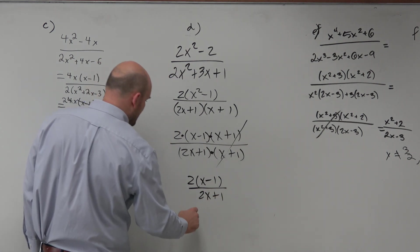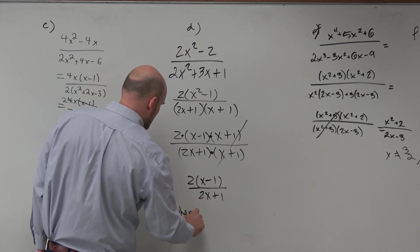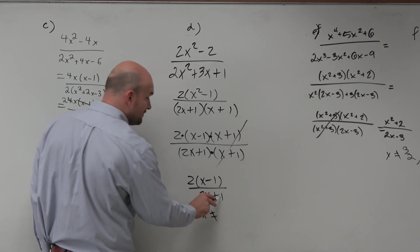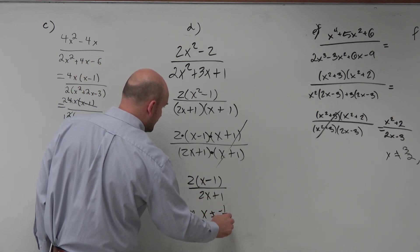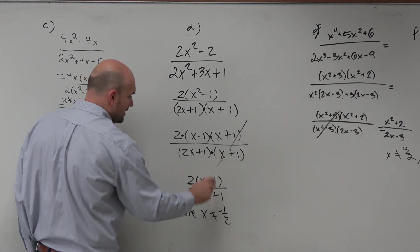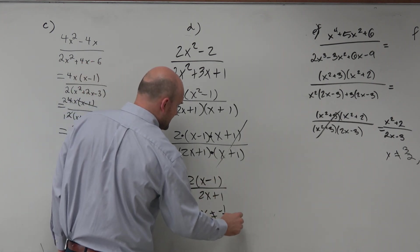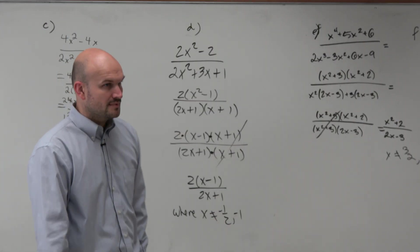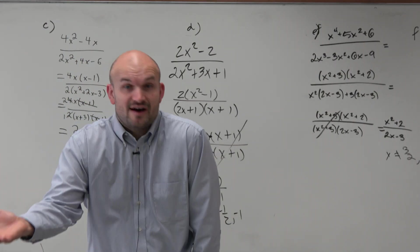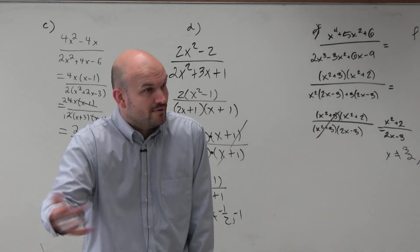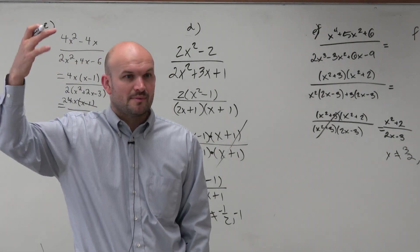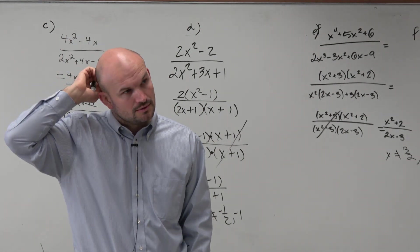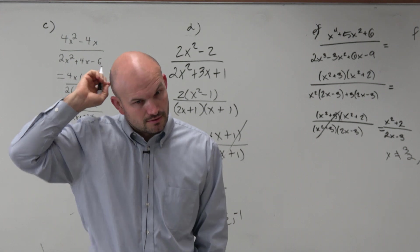Where x cannot equal negative one-half — setting the denominator equal to 0 gives us that restriction. And we'd also say x cannot equal negative 1. Even though it got divided out, from the function's perspective, that just means it represents as a hole.